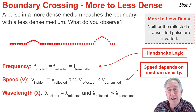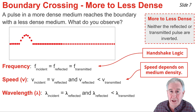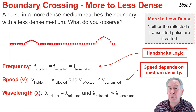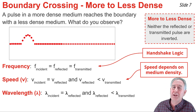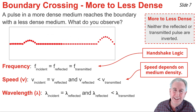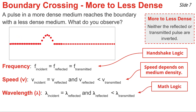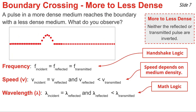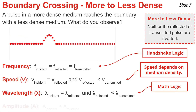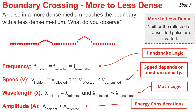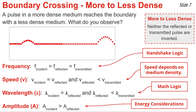The fourth point is that the wavelengths are different, and you can observe it in the animation. The wavelength of the incident pulse is the same as the wavelength of the reflected pulse, but the wavelength of the transmitted pulse is longer than both. This can be explained by math logic: since wavelength depends upon speed and frequency, and frequencies are the same for both media, the wavelength is greatest where the speed is greatest — that is, in the least dense material. Finally, there is a difference in amplitude: the reflected pulse has a smaller amplitude than the incident pulse, because a portion of energy is transmitted across the boundary, leaving less energy and thus a smaller amplitude in the reflected pulse.